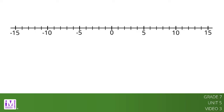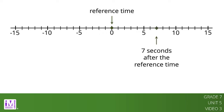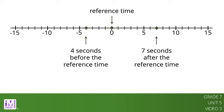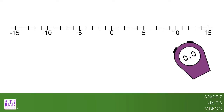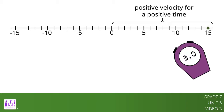We can also use signed numbers to represent time relative to a chosen point in time. We can think of this as starting a stopwatch. The positive times are after the watch starts and the negative times are before the watch starts. Suppose you are moving in a positive direction and you cross position zero right as the timer starts. For times after this reference time, you will have a positive position. But for times that were before the reference time, you must have had a negative position.